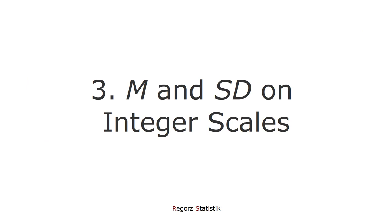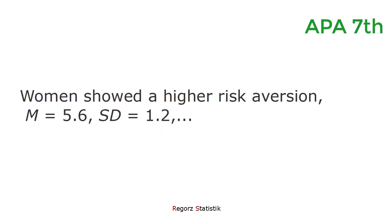Next, we'll be looking at mean and standard deviation for integer scales. That's a new rule with APA 7. If you measure something on an integer scale — and that's the rule for questionnaire data, such as weighting scales, Likert scales, and semantic differentials — you round to one decimal.